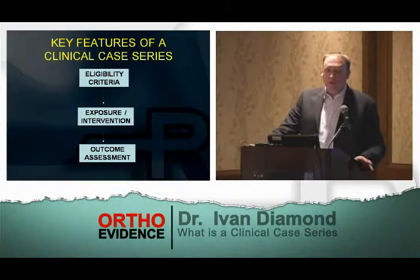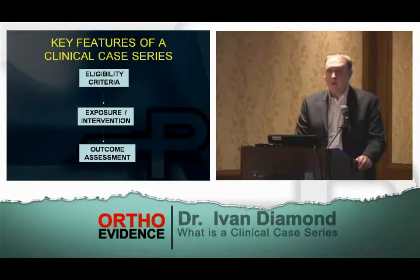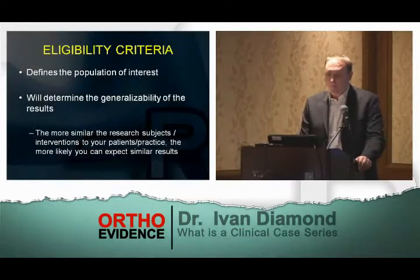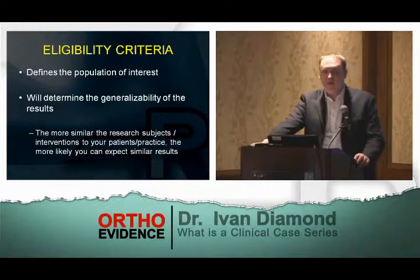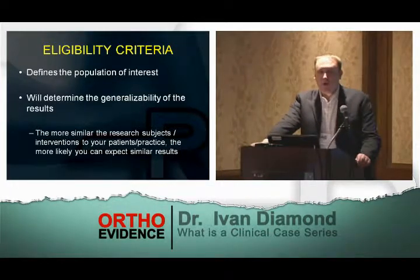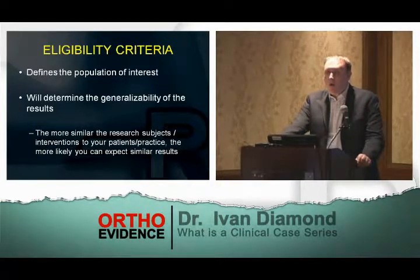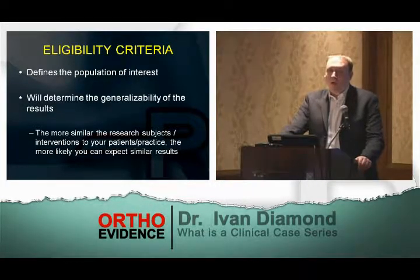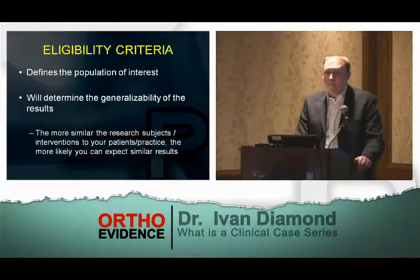The key features of a clinical case series are the eligibility criteria, the exposure or intervention, and the outcome assessment. The eligibility criteria define your population of interest and determine to whom the results are generalizable. The more similar the research subjects and intervention are to your own patients and practice, the more likely you can expect similar outcomes to those described in the case series.